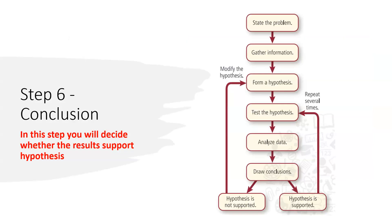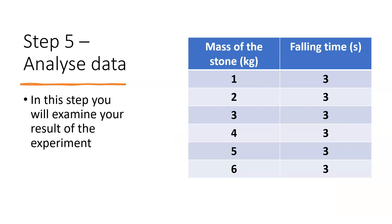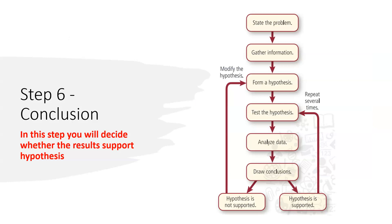The next step is draw conclusion. From the analyzed data, we make a conclusion. We understand that all masses are taking the same amount of time to reach the ground, so mass of the stone does not affect falling time. Our conclusion: all masses will take the same amount of time to reach the ground. Based on our experimental data, we conclude that mass has no effect on falling time.